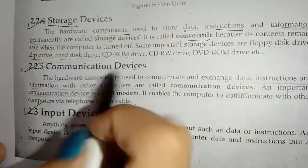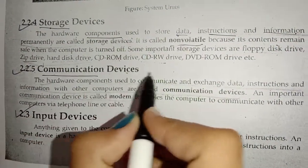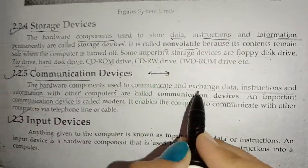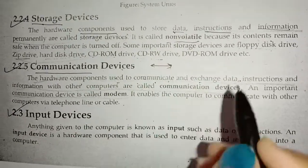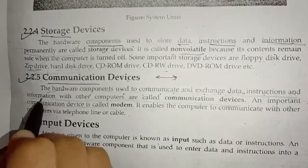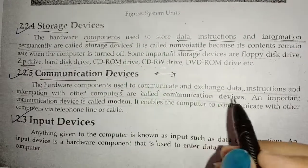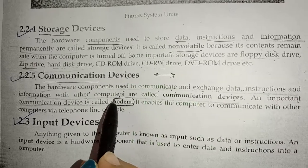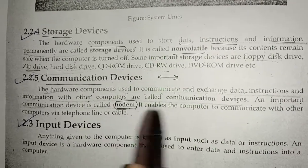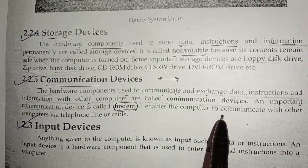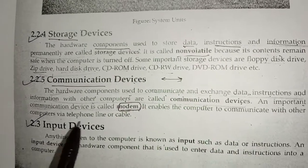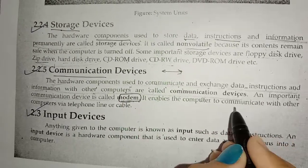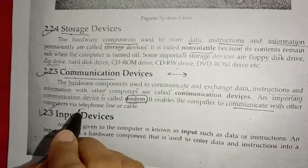What is a communication device? A communication device is a hardware component used to communicate and exchange data, instructions, and information with other computers. An important communication device is the modem, which enables a computer to communicate with other computers via telephone line or cable.